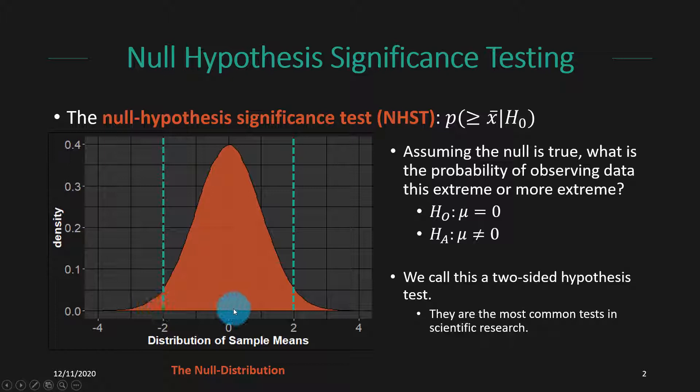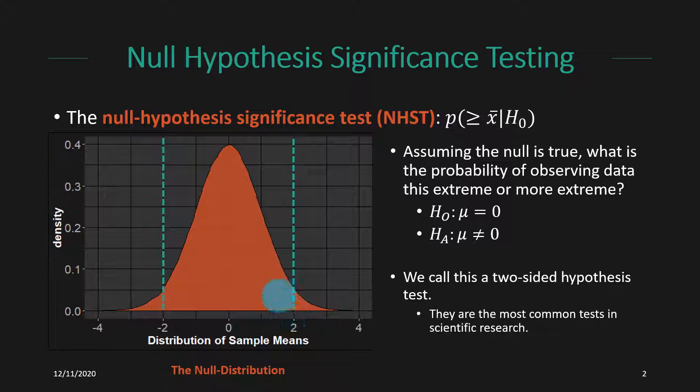When we observe a sample mean, which could fall anywhere along the x-axis, we have to make a decision about whether we think that's a statistically interesting finding or whether it's reasonable to occur under the null hypothesis just due to sampling variability. If the sample mean is near zero, that's pretty reasonable to occur under the null by sampling variability alone. If it's really far out, that's very unlikely. But in a middle-ground case, it's hard to say exactly how unlikely something needs to be before we consider it statistically unusual.